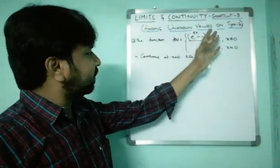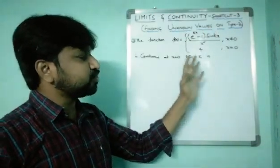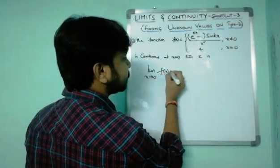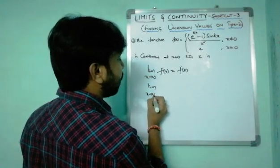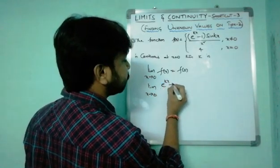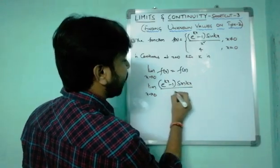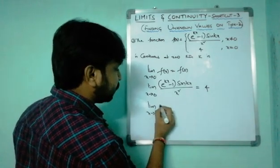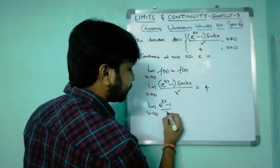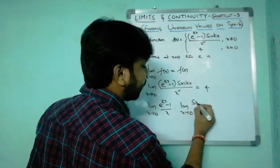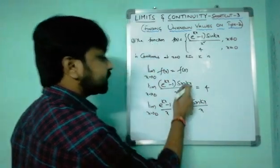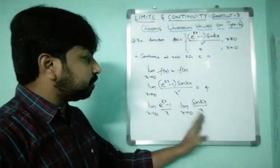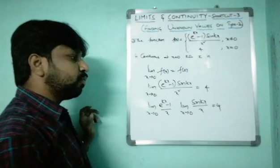Question 3: the function f(x) — for x not equal to 0 — equals (e^(kx) − 1)·sin(kx) / x², and f(0) = 4, continuous at x = 0. Find k. Applying type 2: limit x→0 of f(x) = f(0) = 4. We split the limit: [e^(kx)−1 / x] · [sin(kx) / x], where x² is split as x · x.